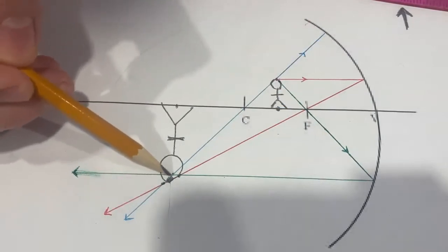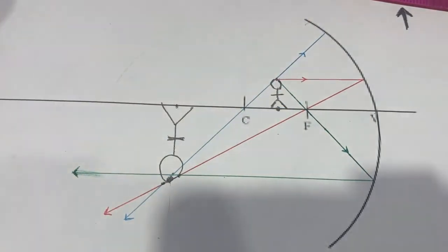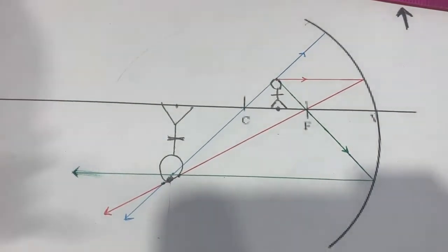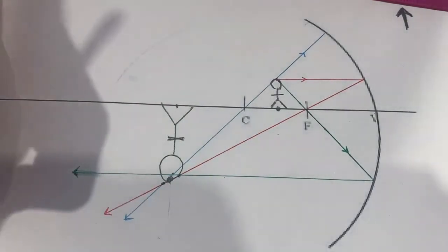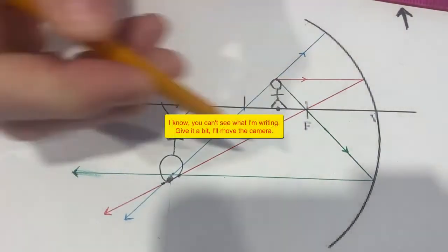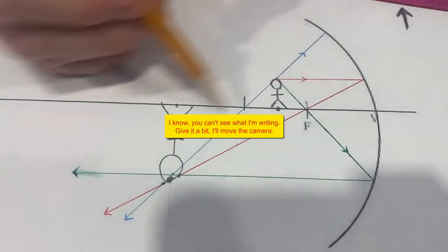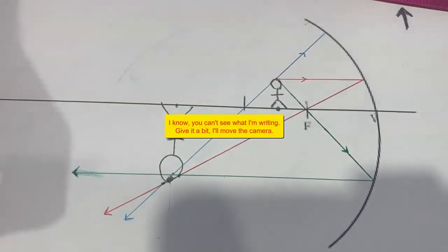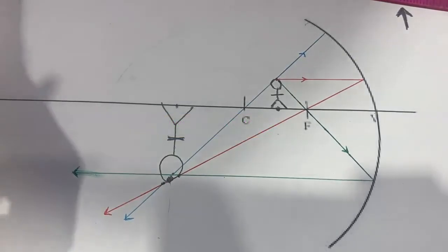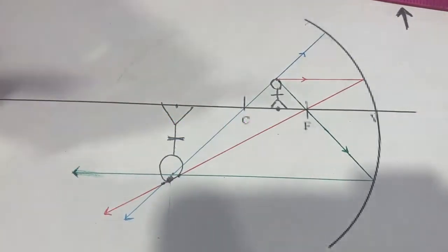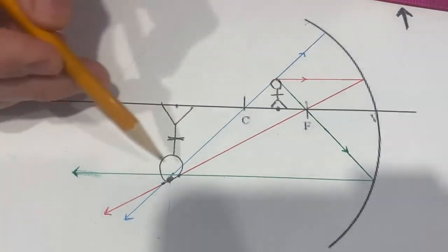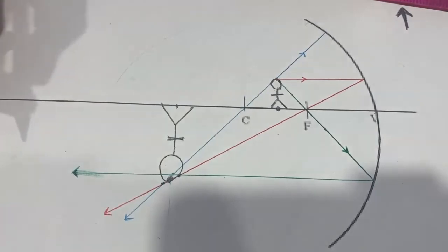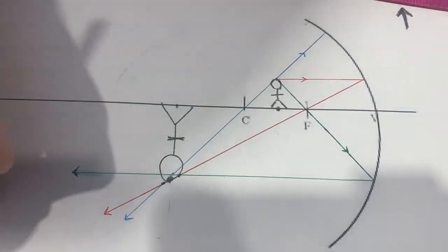Three rays meeting approximately here tells us our image is going to be there. Now for the SALT description — previously for a plane mirror it was fairly simple, but here we need to be more specific. First, looking at the size of the image compared to the object, it's quite a bit larger.